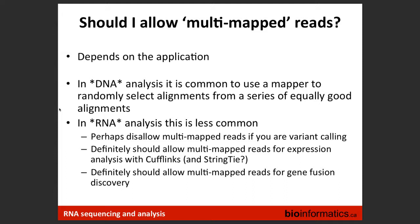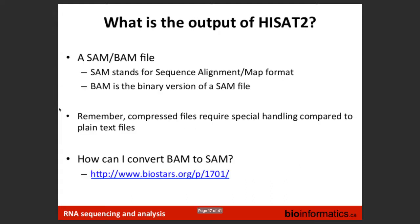With DNA aligners, multi-mapped reads are either assigned to the first hit or randomly selected. With RNA-seq, it depends on your use case. If you're assessing expression, you typically allow multi-mapped reads. If you're doing variant calling, you may want to remove them or select one mapping location. After alignment you get a SAM file — similar to a fastq but containing alignment information: chromosome, position, mapping quality, per-base quality — plus a flag for unmapped reads.